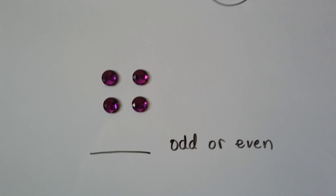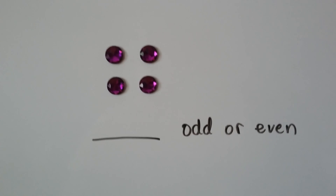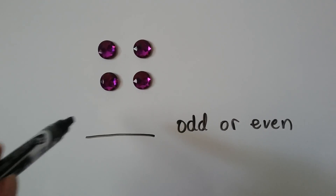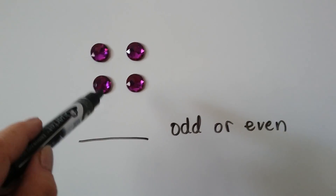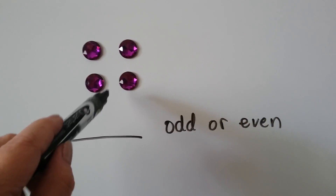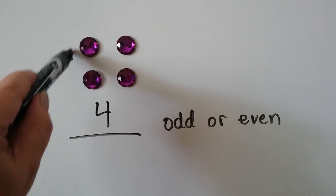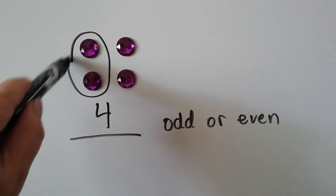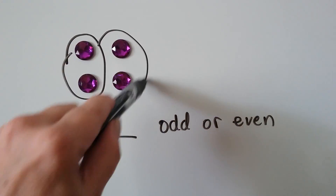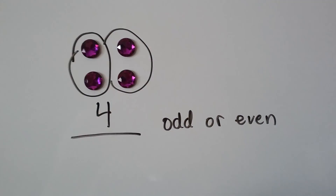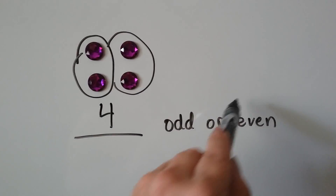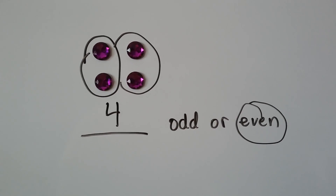How about now? There's 1, 2, 3, 4. We can make pairs and there's none left over, so it's even.